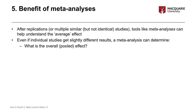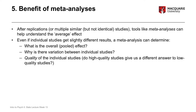Meta-analyses can tell you the overall average effect, also called the pooled effect — what it is and how big it is. They can also determine why there's variation between studies, looking at factors that predict or explain differences in findings — for example, whether studies on adolescents produce different findings to studies on adults, or whether studies conducted in the US differ from those in Australia. They can also give you insight into the quality of individual studies, whether high-quality studies give different answers to low-quality ones.